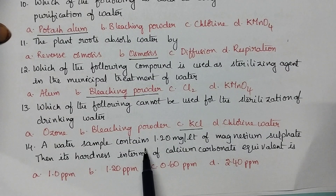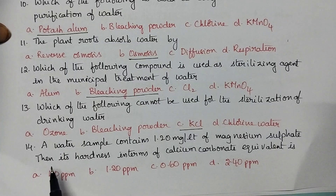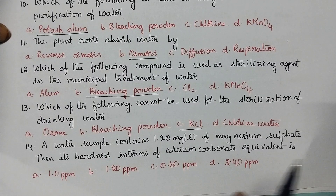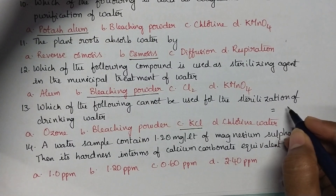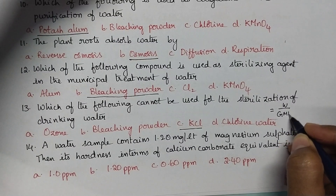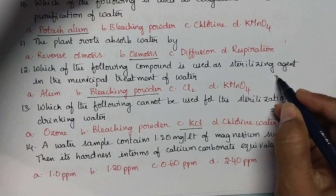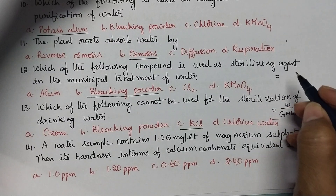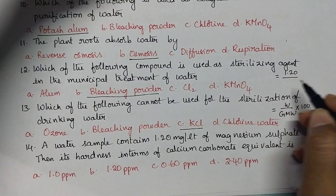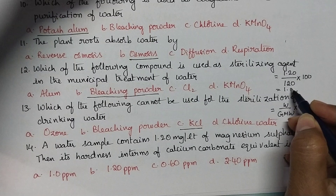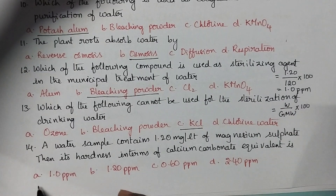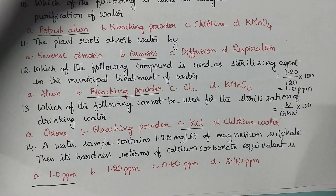A water sample contains 1.20 mg per litre of magnesium sulphate. Its hardness in terms of calcium carbonate equivalent is calculated using the formula: (weight / gram molecular weight) × 100. The weight of magnesium sulphate is 1.20 and its gram molecular weight is 120, so (1.20 / 120) × 100 = 1.0 ppm.